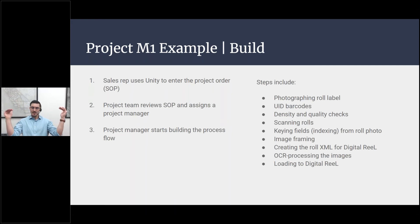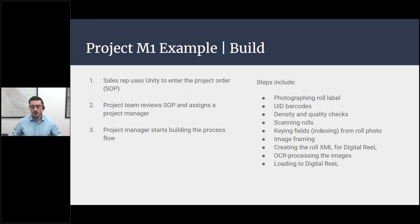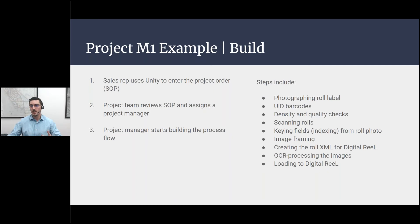Then the project manager starts building that process flow. The individual steps would include photographing the roll label, applying a barcode — a unique identifier — so every unit that comes into our facilities gets a unique ID number. For 1,500 rolls of microfilm there will be 1,500 unique units tracked throughout the entire process. Microfilm gets density and quality checks, then we scan the rolls, index the fields by keying from the roll photo, frame images, create XMLs, do OCR processing, and load to the system.